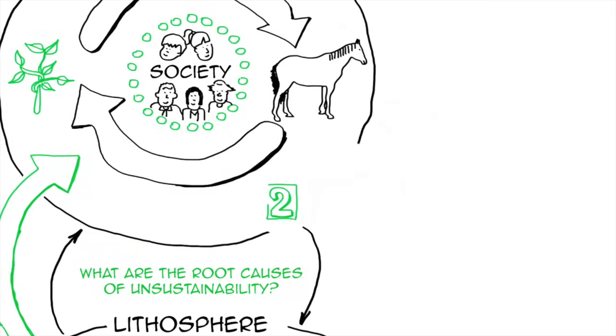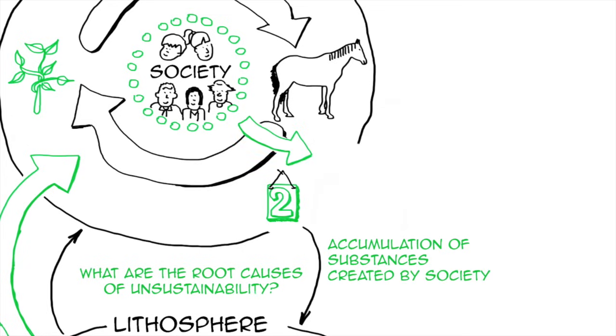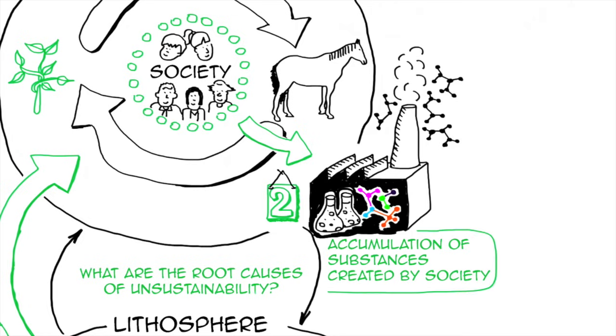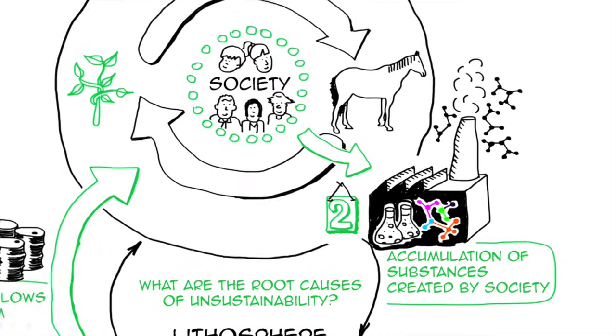The second one is that we create in our society substances that accumulate in nature. We create chemical compounds that nature takes a very long time to break down, but we also create substances that already exist in nature, like carbon dioxide for example, but in such large quantities that they accumulate and nature cannot cope.